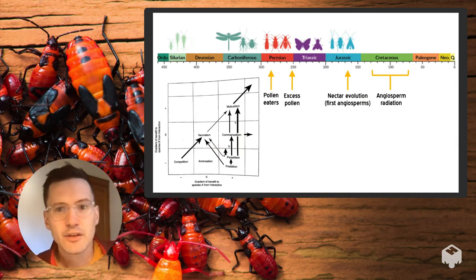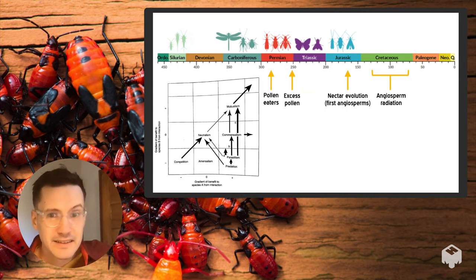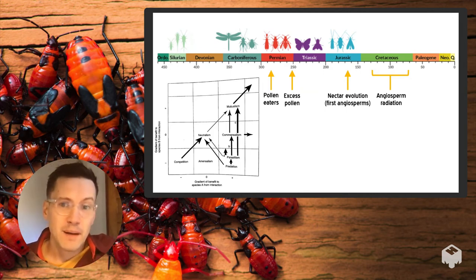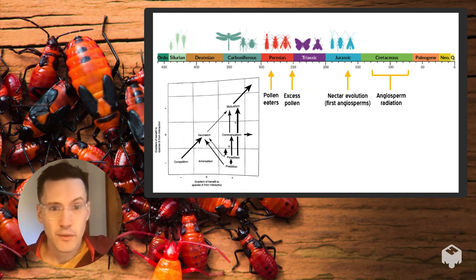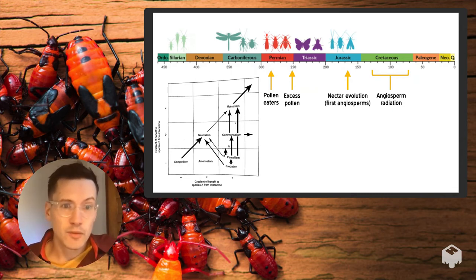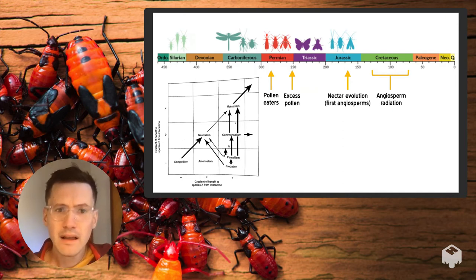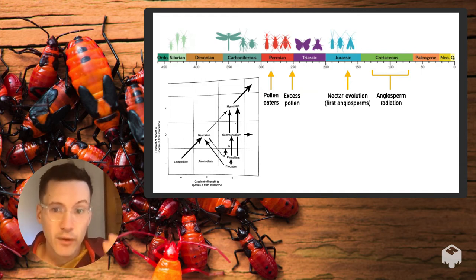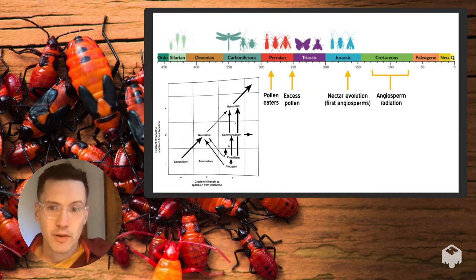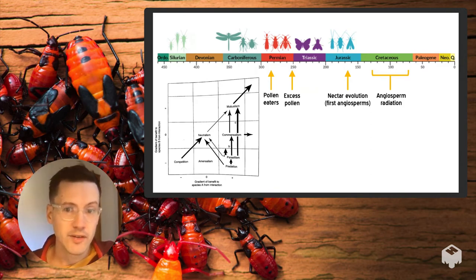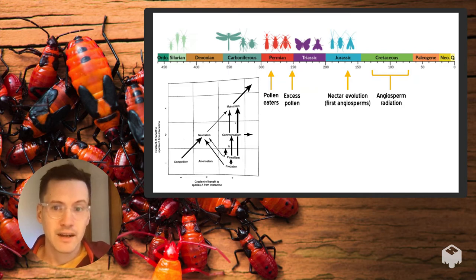All that nutritious pollen attracted hungry insects. The earliest evidence of pollen consumption comes from the early Permian, nearly 300 million years ago, through fossilized insect remains. Pollen is a pretty nutritious food source, providing proteins, lipids, and carbohydrates. As more insects began feeding on pollen produced by gymnosperms, there was strong selective pressure for plants to produce excess pollen — enough to feed the insects and still have some left to be transported to a receptive female flower. Over the next 150 million years, plants developed other means of attracting insects, including producing nectar as a reward.